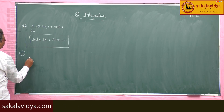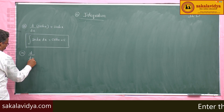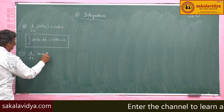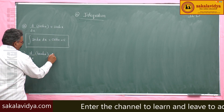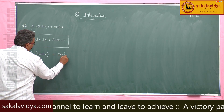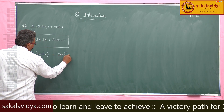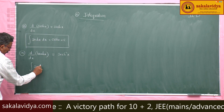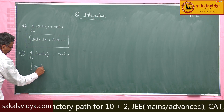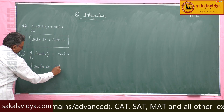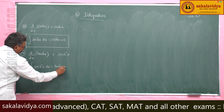Next, d by dx of tanh x is sech squared x. So, integral of sech squared x dx is equal to tanh x plus c.